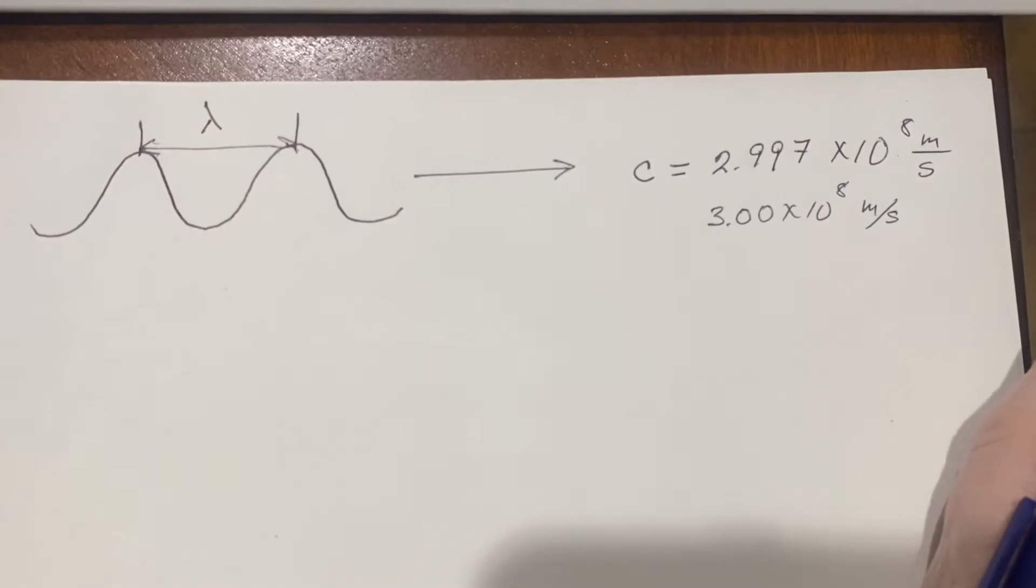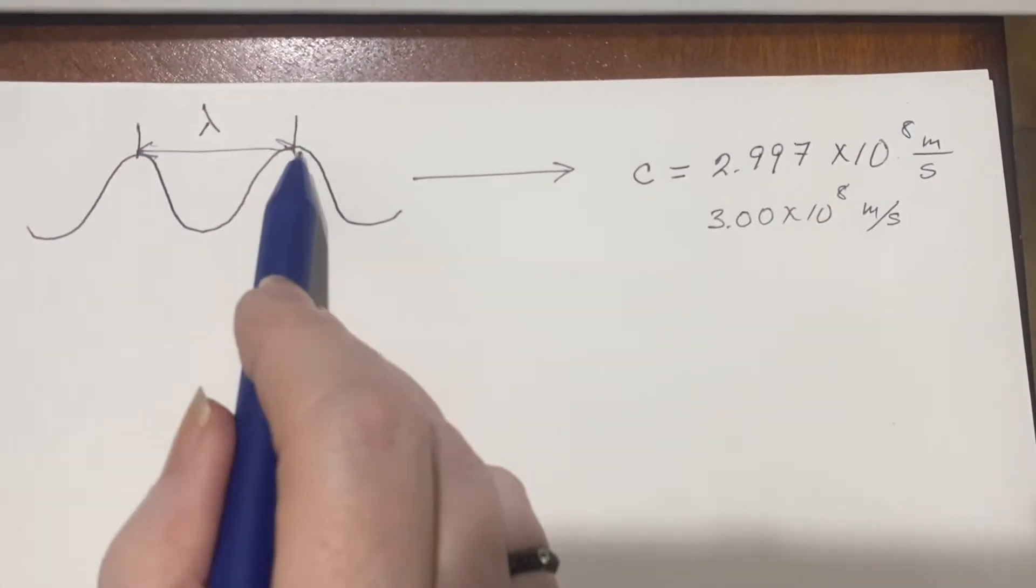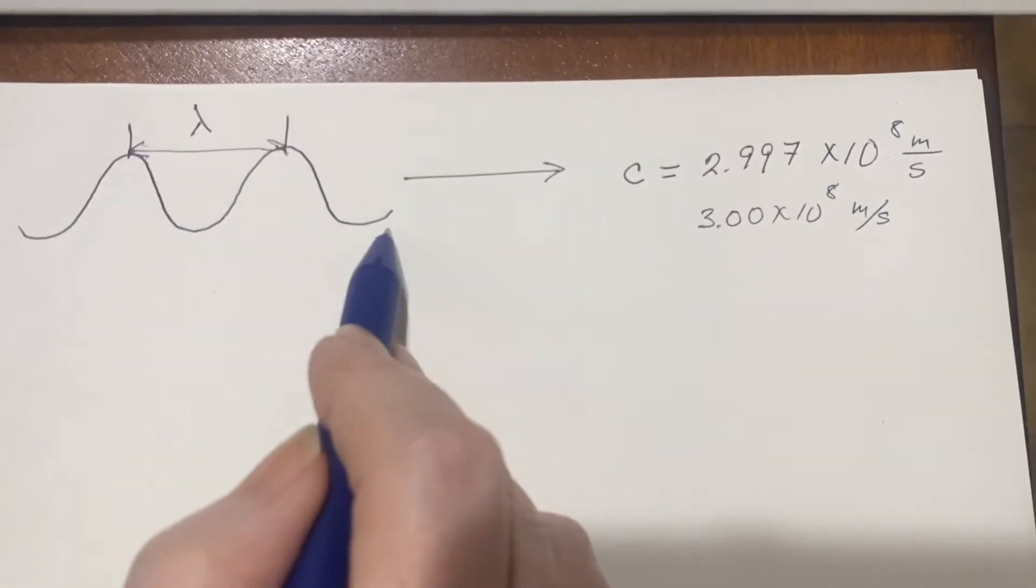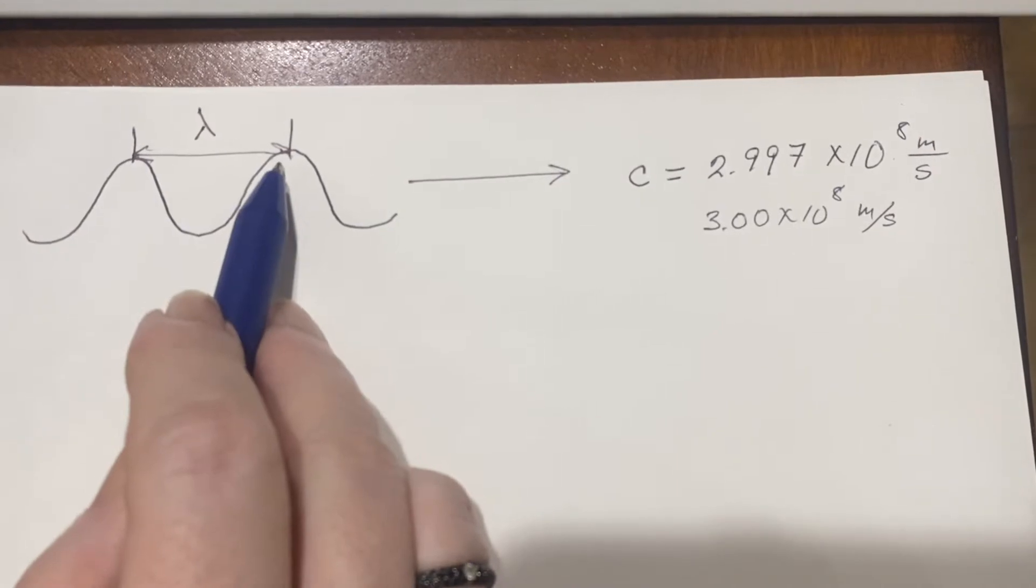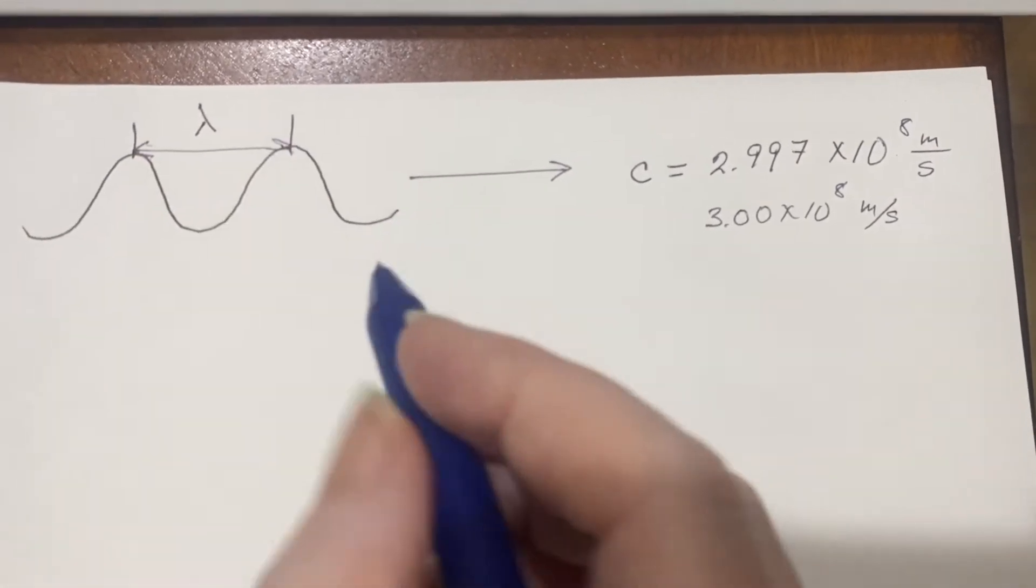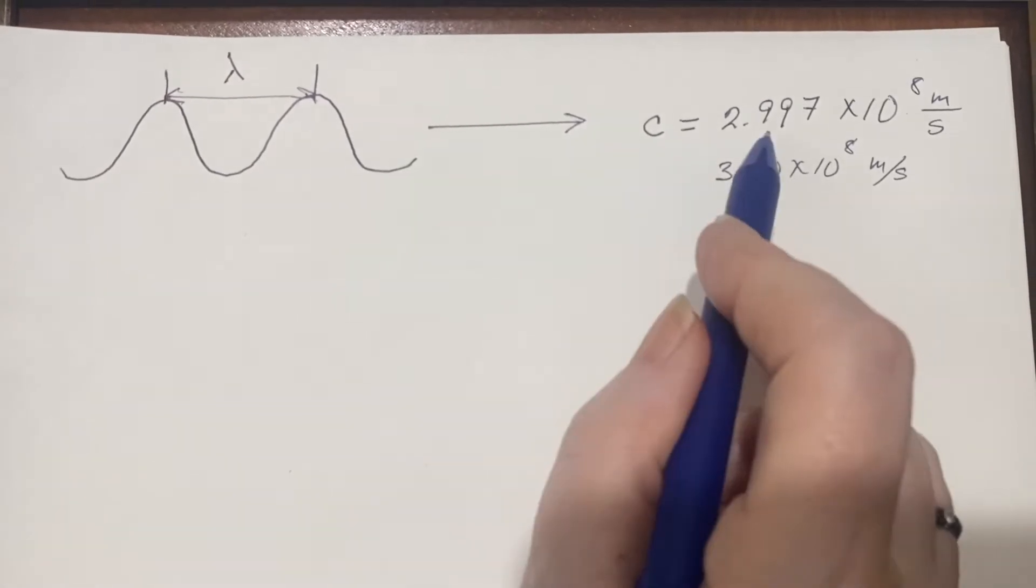That's how fast the crest would be moving, and the crest following it and the crest following that. All of them are moving at that speed because these are not stretching out or getting crunched together. They are of a particular frequency and wavelength. So the wavelength is not going to change as it radiates through space.